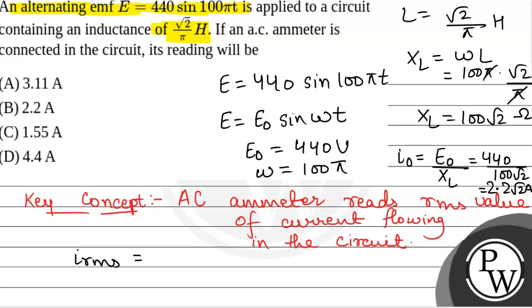We know that I_RMS is equal to peak value of current divided by √2. So I₀ by √2, that will be equal to 2.2√2 by √2, which equals 2.2 ampere. The value of I_RMS will be 2.2 ampere.